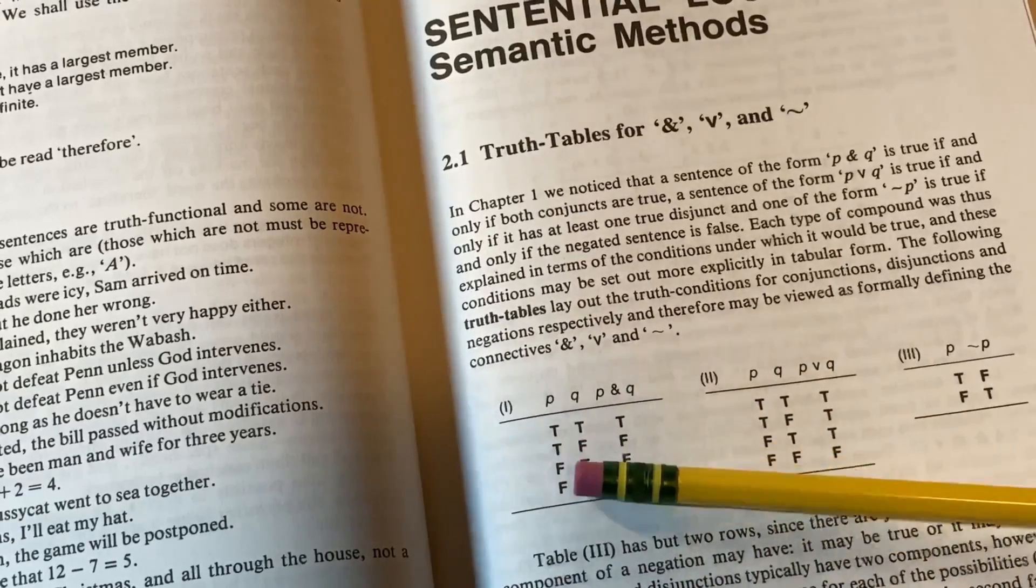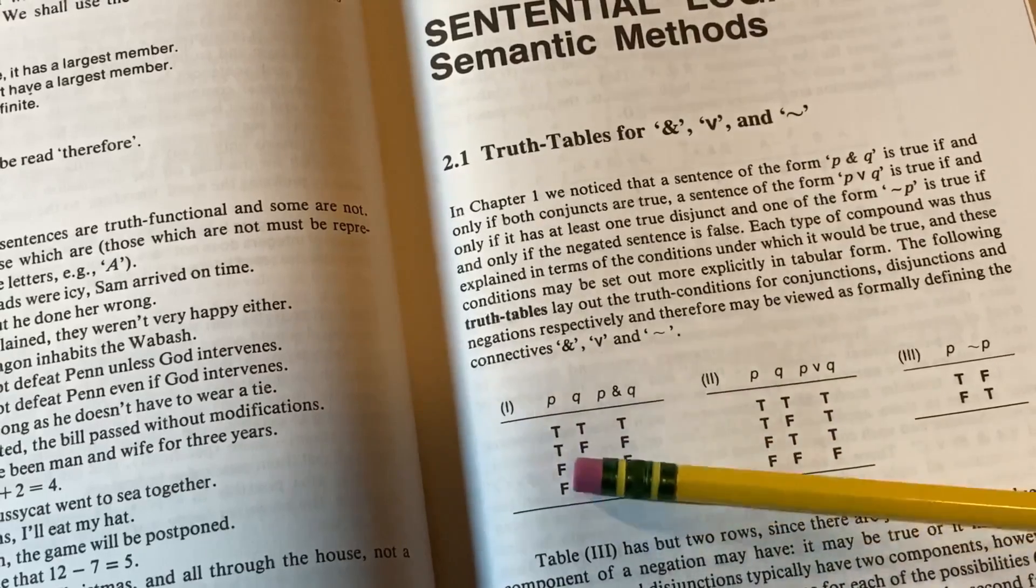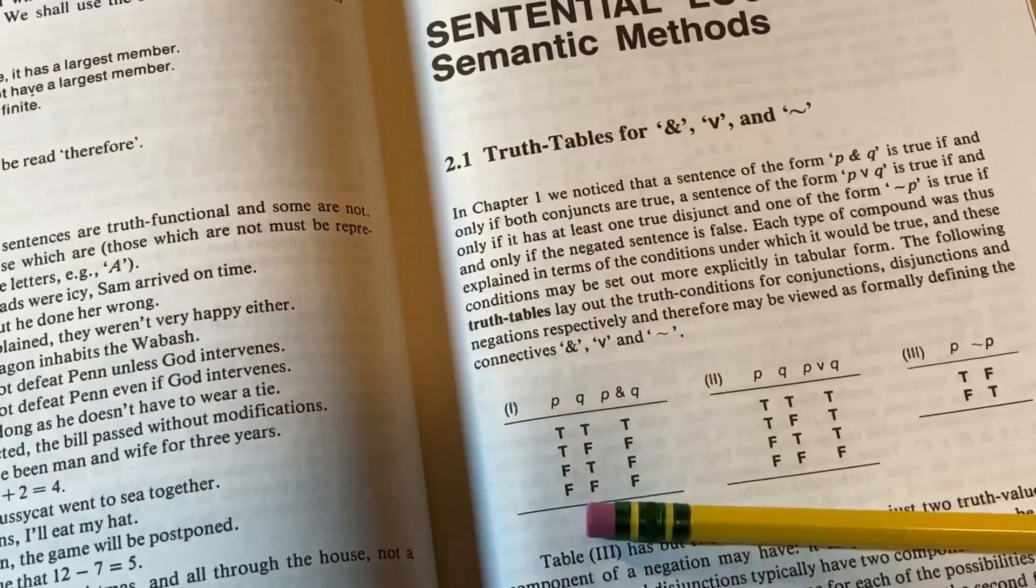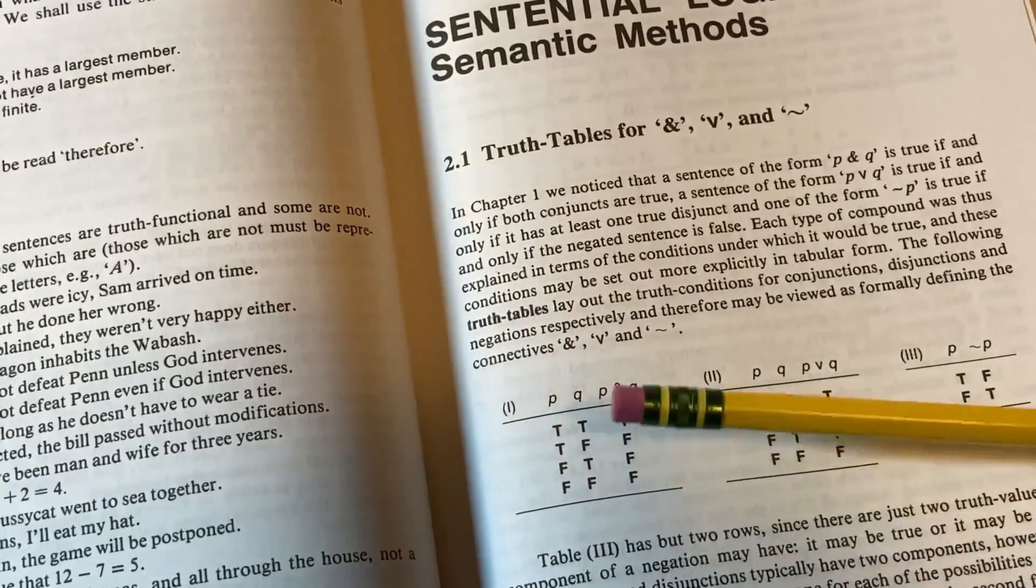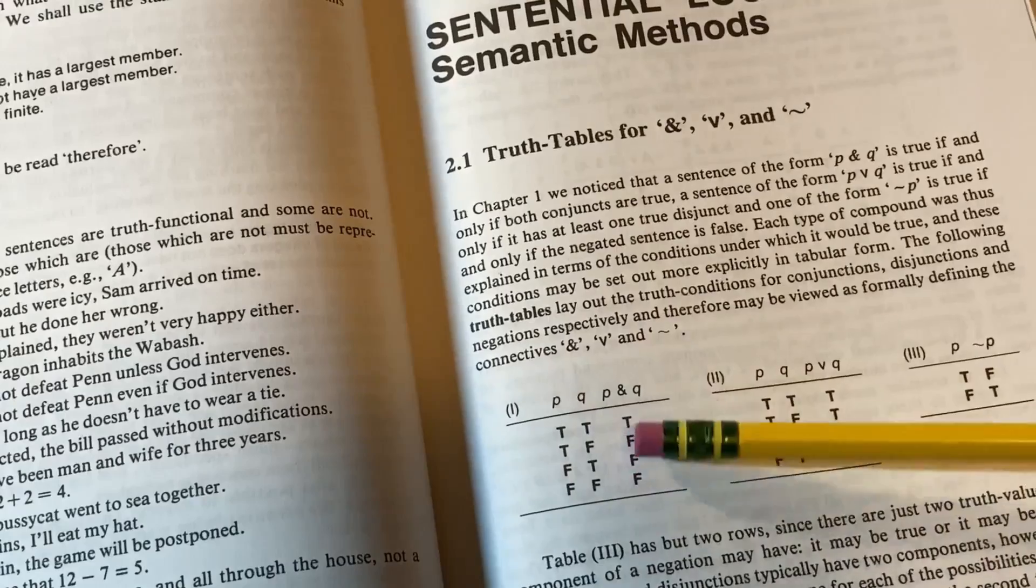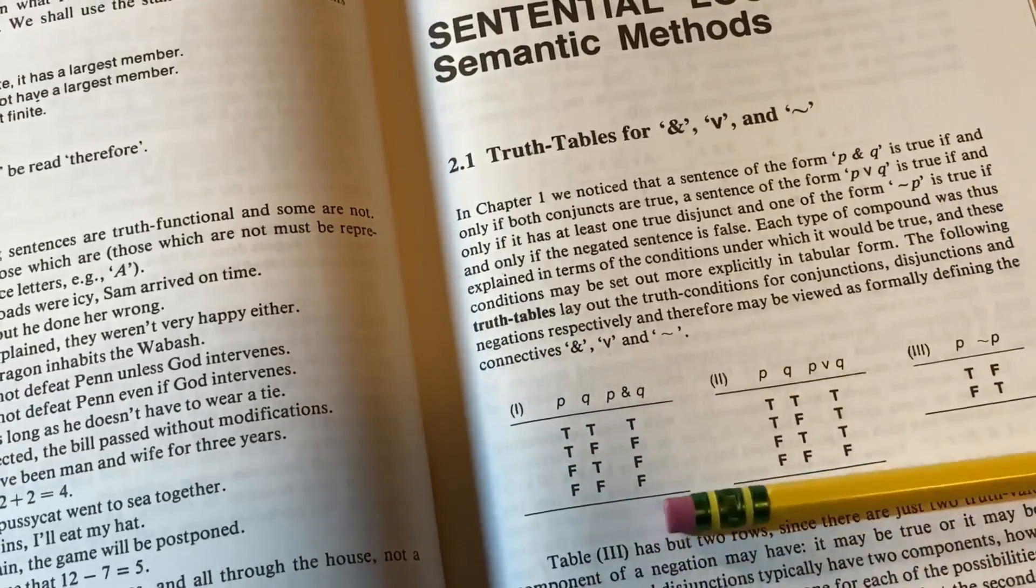And then the second row says P is true and Q is false. Well, it's going to be false. Third row, P is false, Q is true. Well, it's false. And then the last row, if they're both false, it's false. So an and statement like P and Q is only going to be true when they're both true. And that's like super important in mathematics. That's like critical for understanding that.